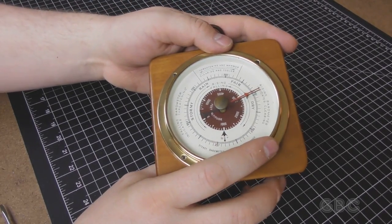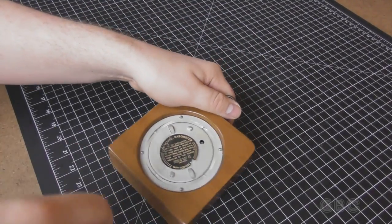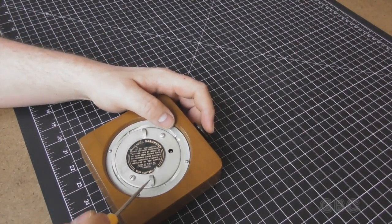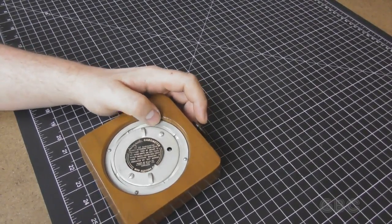So we're going to take this apart, take a look inside and see if there's anything that can be lubricated. I'm going to start by removing these four screws on the back. I'm going to pause for a moment and take these screws out.